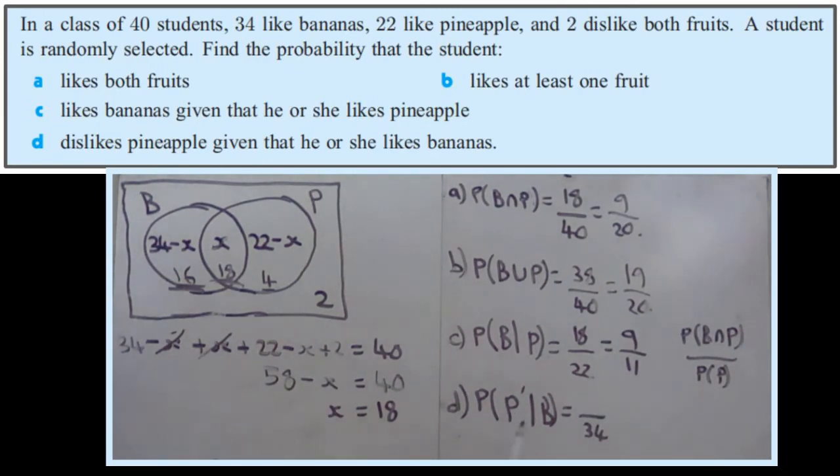Out of those 34, how many don't like pineapples? So that's the ones that are outside of the pineapple circle. So this area here, this 16 is B and not P. So they don't like pineapples and they do like bananas. So both of these conditions are true for these 16. 16 over 34 is 8 over 17.